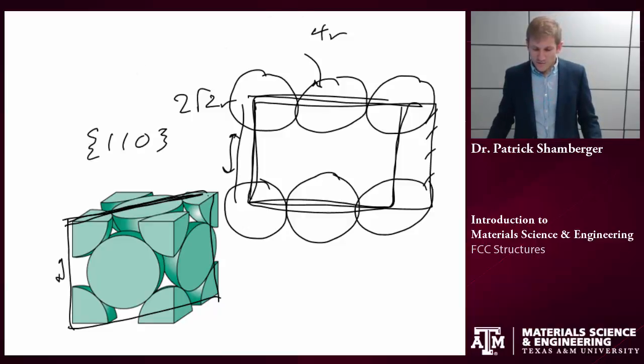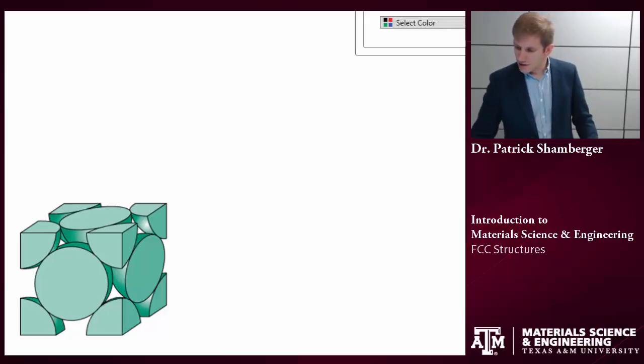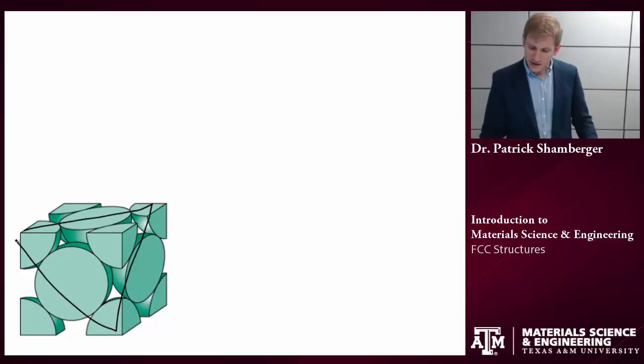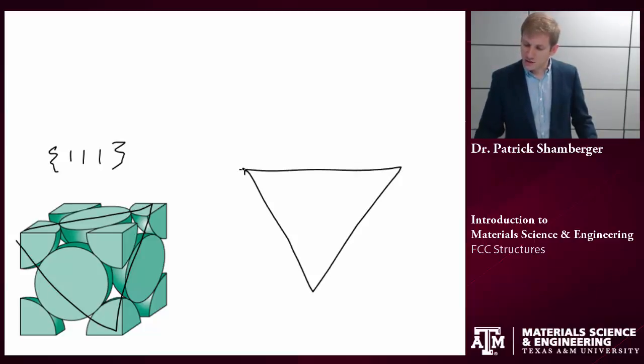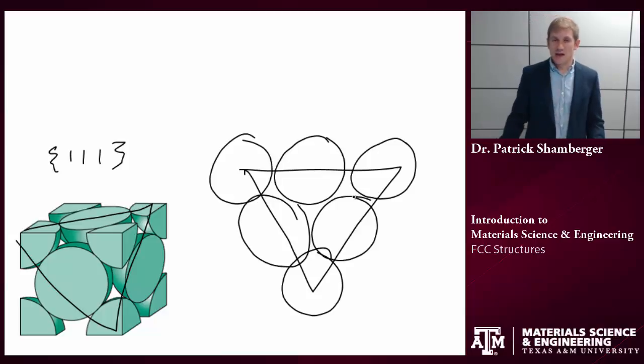Let's look at one final plane. If I look at a plane like this, this is the 1, 1, 1 family of planes. If I were to redraw that, I have a triangle with atoms that are touching each other. This is, again, our close-packed plane. And that's all that I wanted to share.